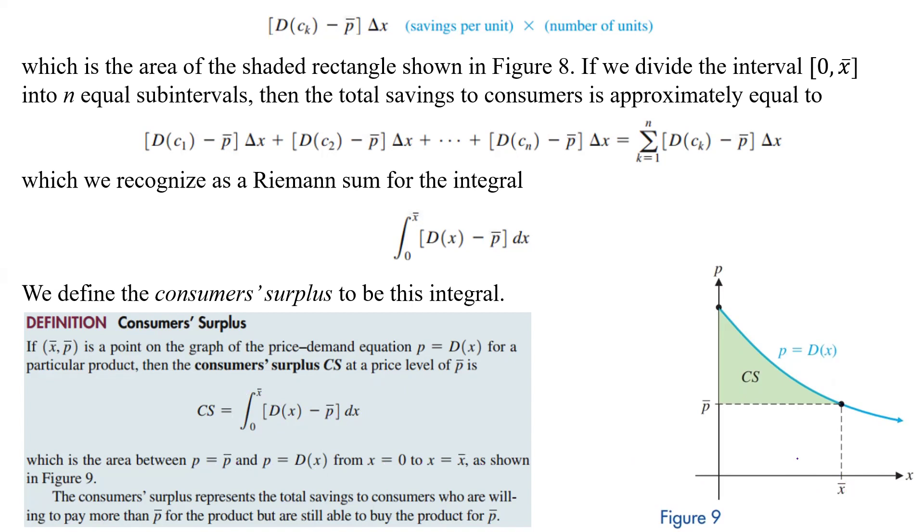Now, the consumer surplus represents the total savings to consumers who are willing to pay more than P bar for the product but are still able to buy the product for P bar. So that's how much they're saving if they're willing to pay this but they still only pay that P bar price.